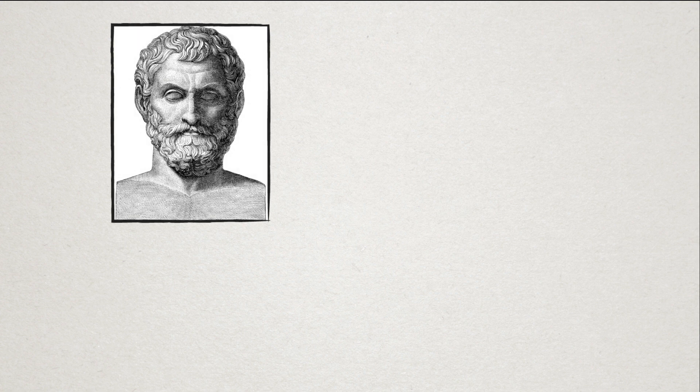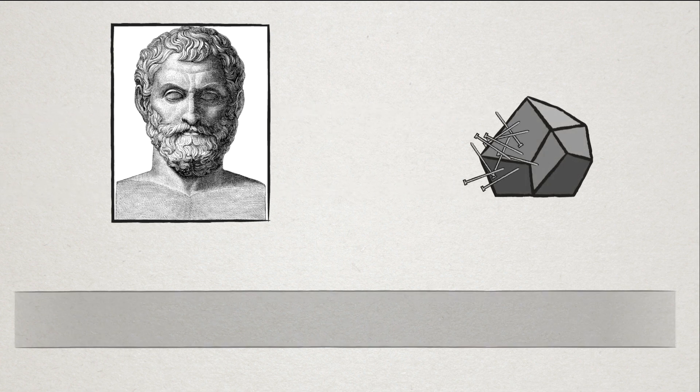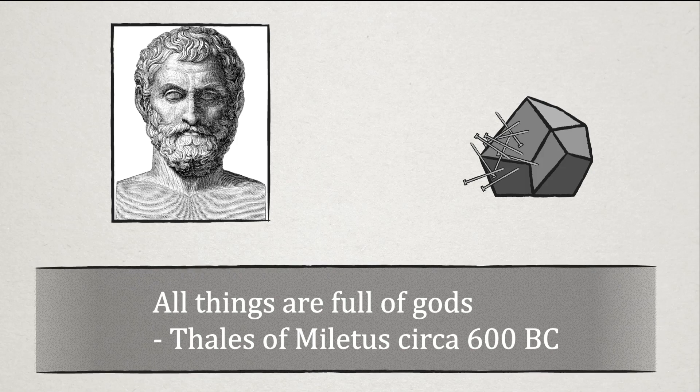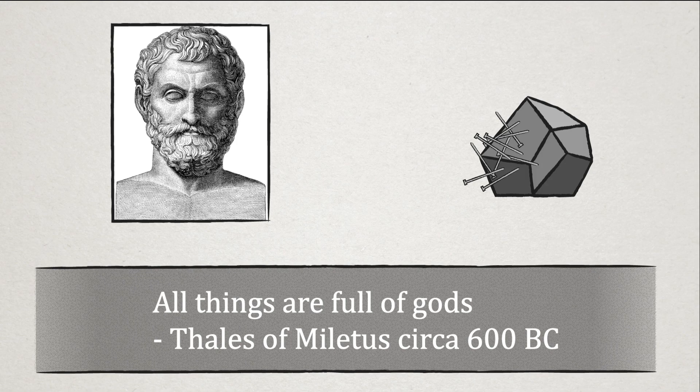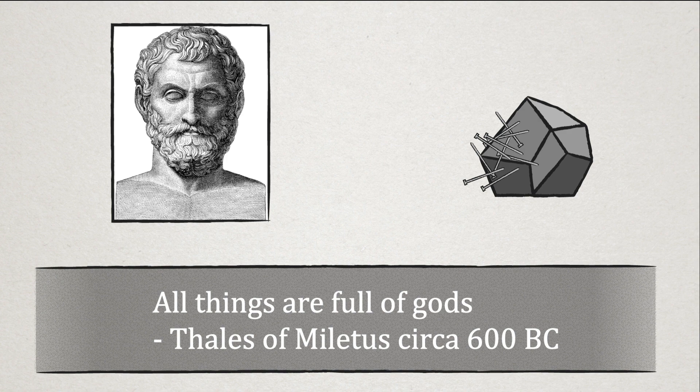Although at the time he thought it was because lodestones, which are naturally forming magnets, had souls, and it was these souls that caused iron to become attracted to them. While not quite correct on the soul front, he was noticing that magnets can attract other magnetic materials. But why is this the case? And how does magnetism work in general?